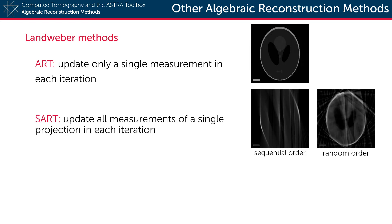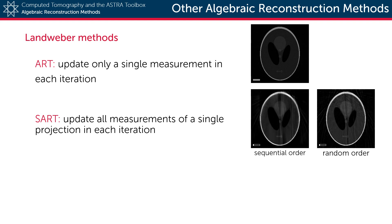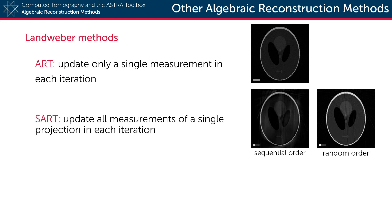In the simultaneous algebraic reconstruction technique, or SART, each iteration updates all detector values that belong to a single projection direction. That way it combines the increased reconstruction stability of SIRT with the increased convergence speed of the algebraic reconstruction technique, ART.